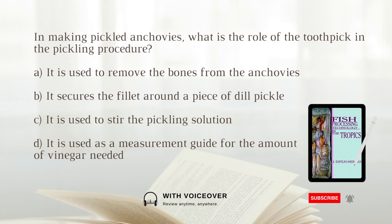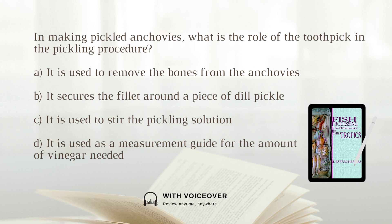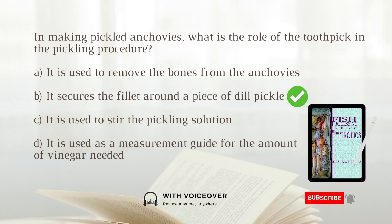In making pickled anchovies, what is the role of the toothpick in the pickling procedure? A. It is used to remove the bones from the anchovies. B. It secures the fillet around a piece of dill pickle. C. It is used to stir the pickle. D. It is used to stir into the pickle. Answer: B. It secures the fillet around a piece of dill pickle.